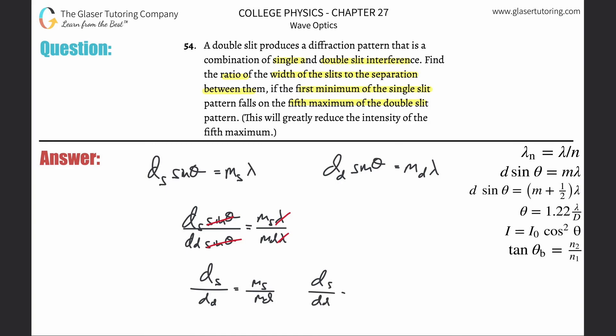So that's the first order, so DS over DD is going to be equal to one, divided by then what's the order for the maximum? Well, it's the fifth, right, for the double slit. So that's basically the answer here, and then you can reorganize this however you like.